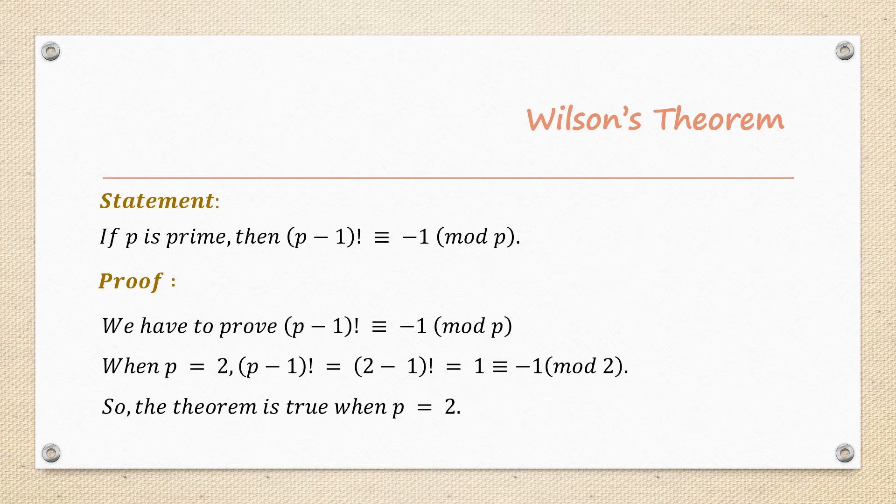Now let us start the proof of the theorem. We have to prove that (P-1)! ≡ -1 (mod P). I am going to apply mathematical induction. When P = 2: 2 is a prime number. Replacing P with 2 gives (2-1)! = 1, so we need 1 ≡ -1 (mod 2).